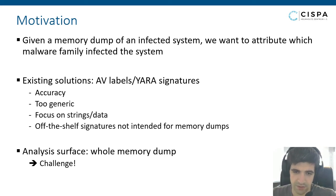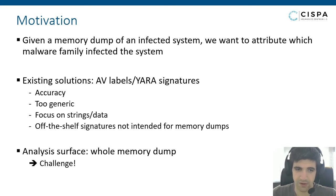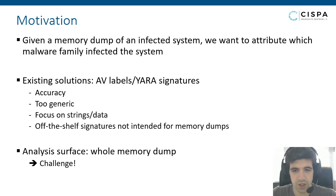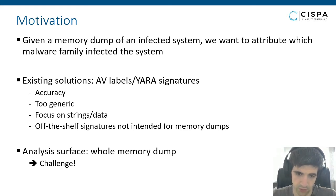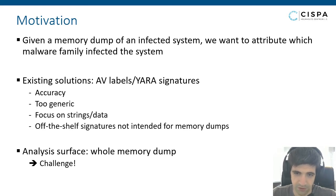This by itself is a problem — you could say you just need to improve the signature. But another problem is that off-the-shelf signatures you can find online are not really intended for being used with memory dumps. In our experience, they are intended to work with the samples, and if you try to apply them to memory dumps, they simply don't work. So we basically want a solution to automatically create such signatures that work with memory dumps.